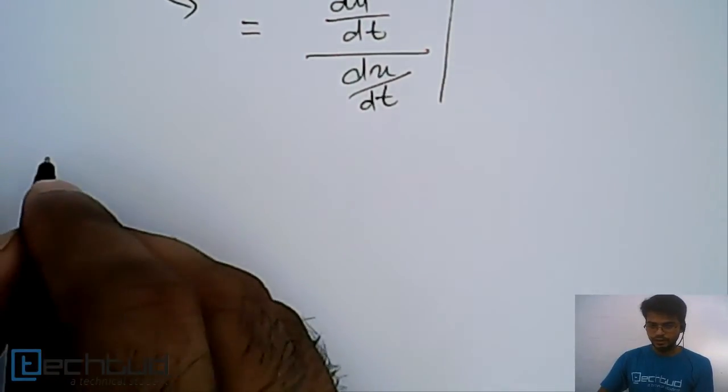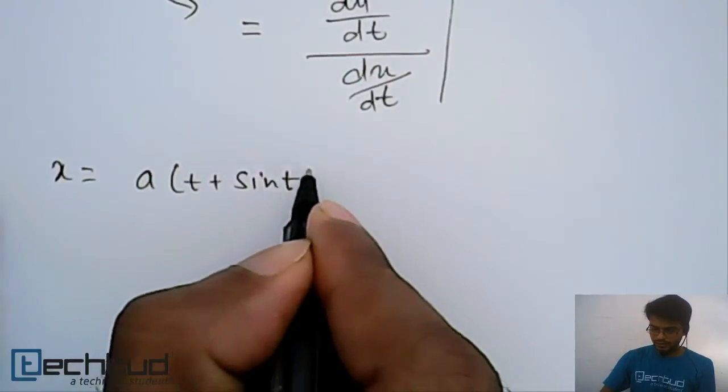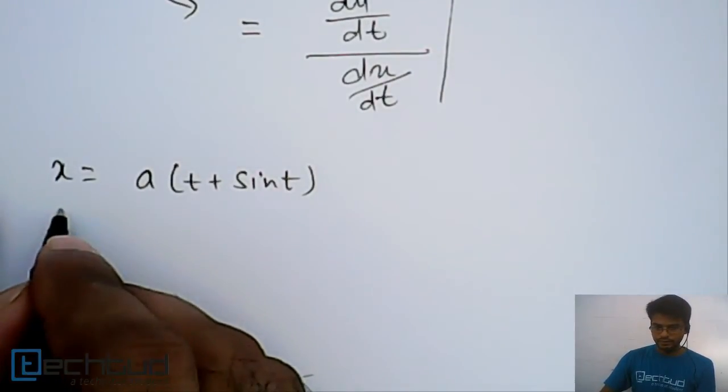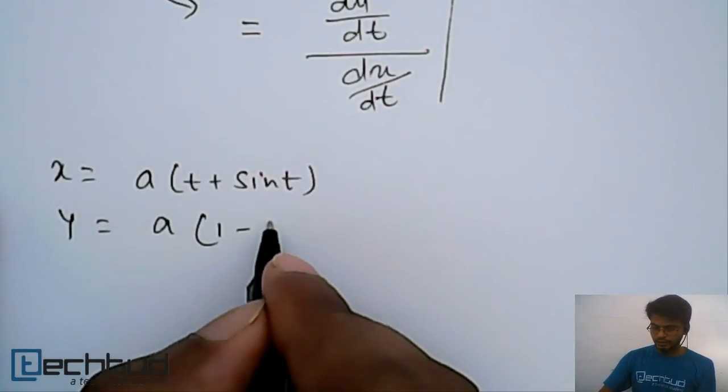Let's say x equals a(t + sin t) and y equals a(1 - cos t).